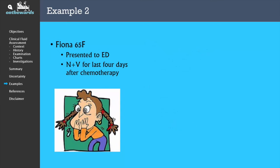The second example is of Fiona, who presented to the emergency department with intractable nausea and vomiting since receiving chemotherapy 4 days ago. Review of the medical history reveals that she has a resectable GOJ cancer for which she received a cycle of neoadjuvant chemotherapy 4 days ago.